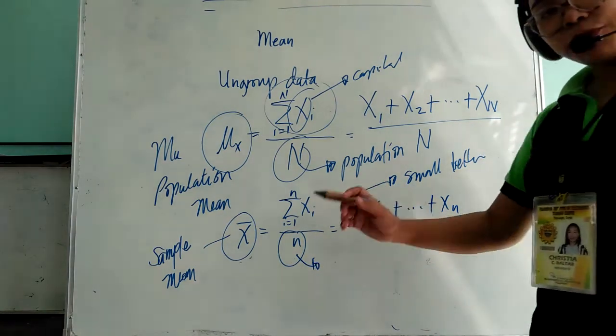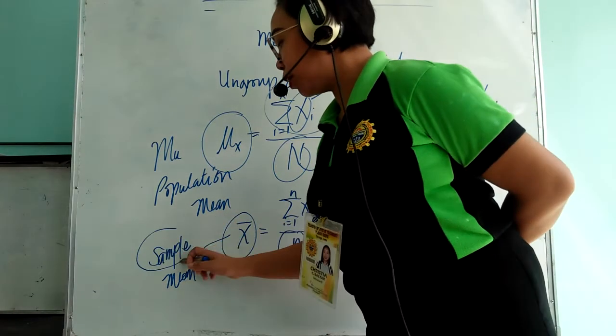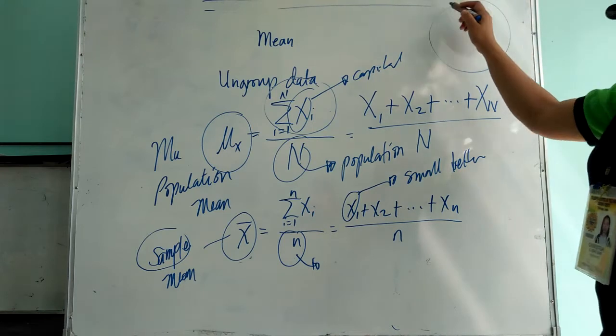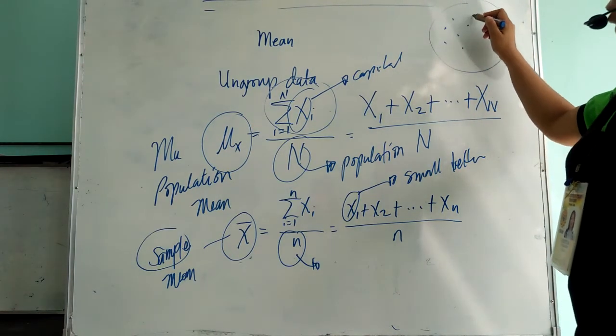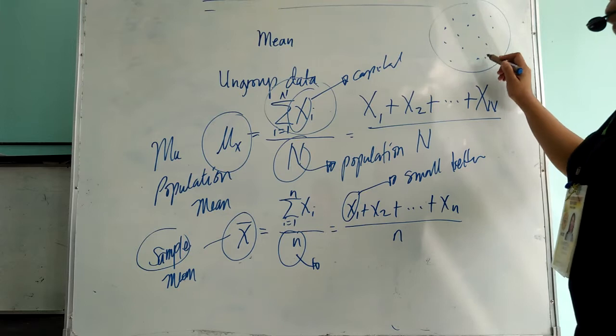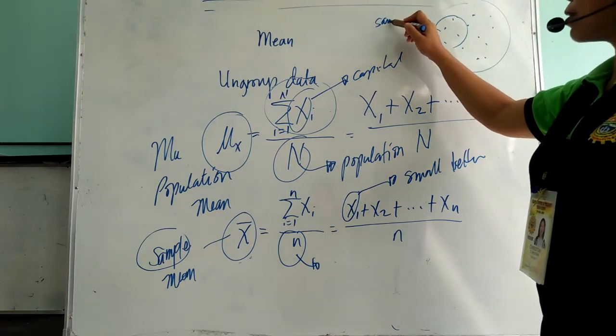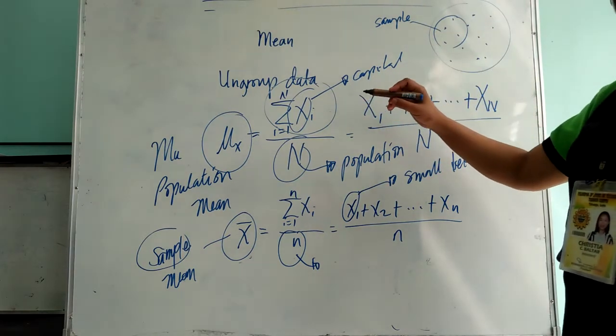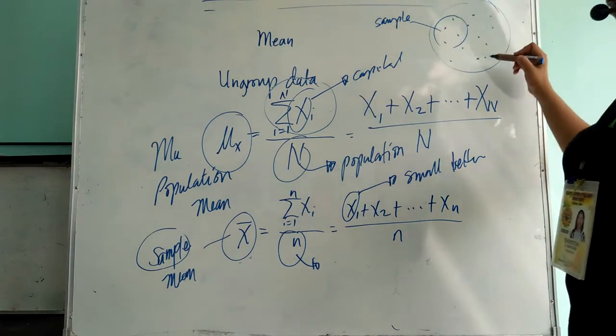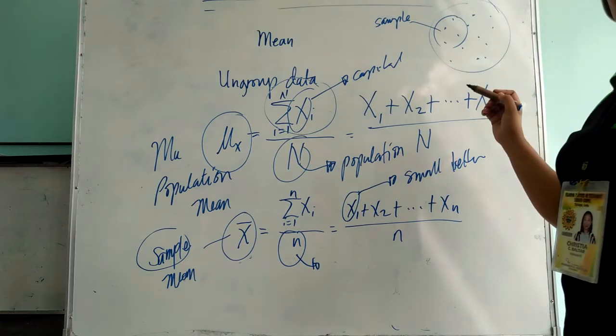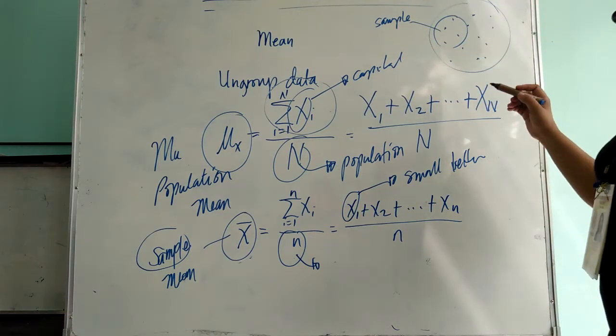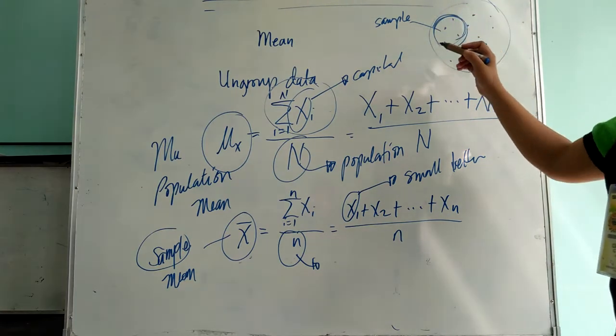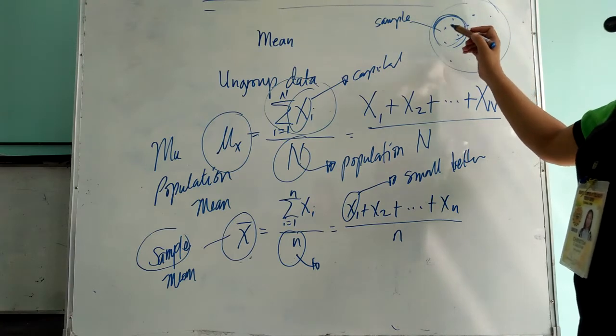So take note that if we recall, when we say sample, if this circle illustrates the list of observations in a population, a part of it is what we call the sample. So if you want to get the population mean, meaning we are calculating the mean of the entire observations. Whereas if we calculate the sample mean, we always use a part of the observations of the entire population.